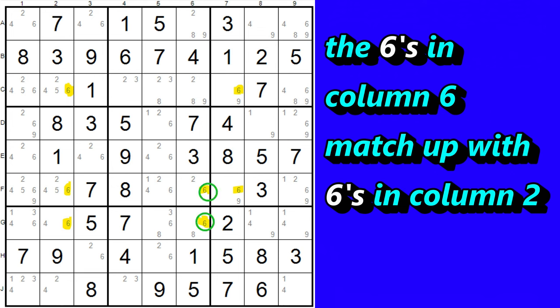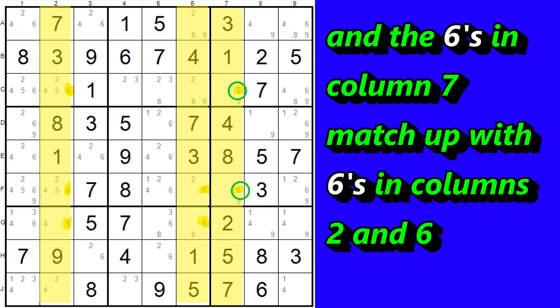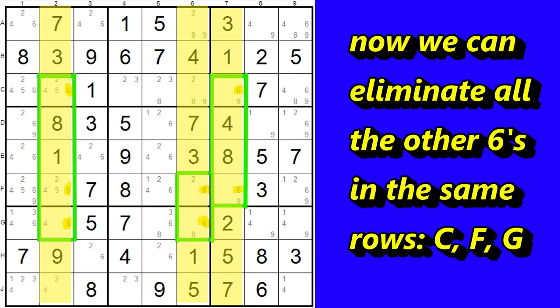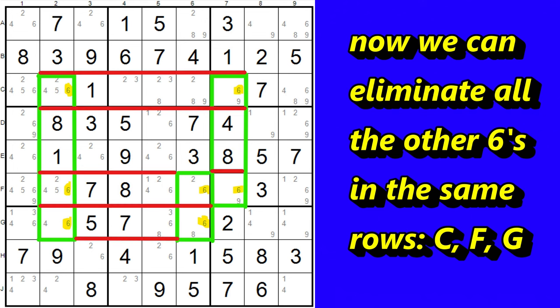This is also true for the 6s in column 6. They match up with the 6s in column 2. And then the 6s in column 7 match with the 6s in column 2 and also column 6. So you can see that we have 3 columns with 6s. And now we can eliminate all the other 6s in the corresponding rows.